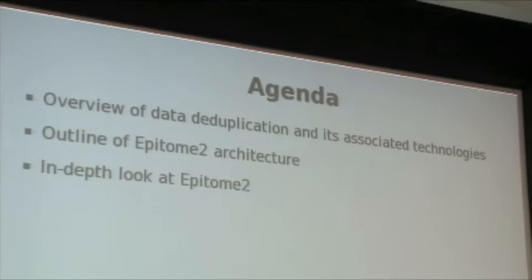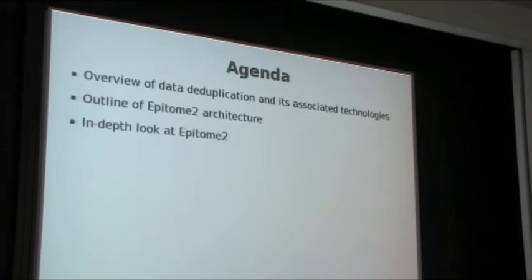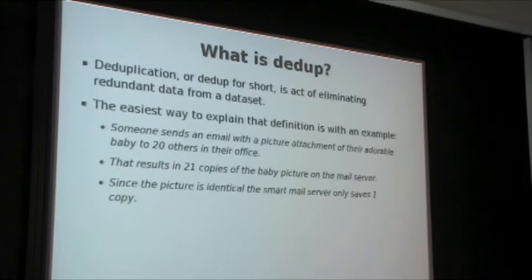Then we're going to talk about the code that I actually wrote for Epitome. It's called Epitome number two because I did a first version that was local disk only. The latest version is a network daemon version. We're going to look at that one and why it is different from the previous version. And in the end we're going to look at the implementation details.